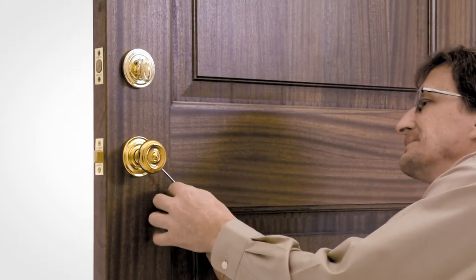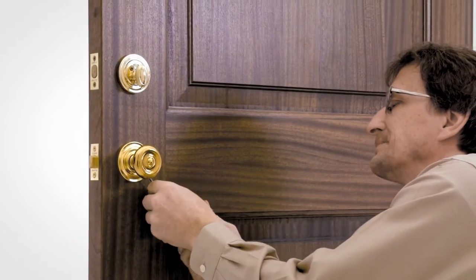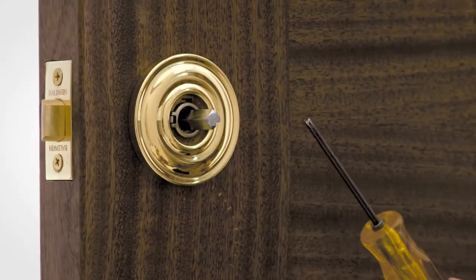First, loosen the set screw using the Allen wrench provided. Remove the knob or lever from the spindle.